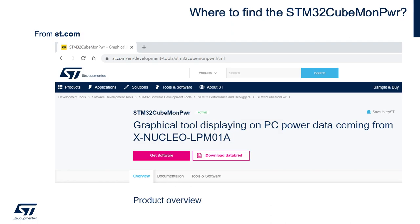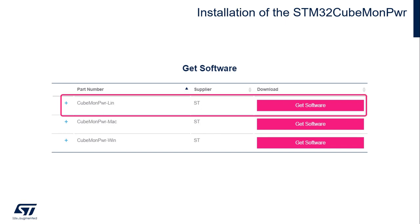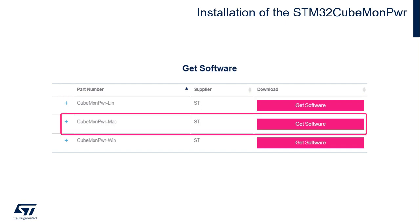Where do you find the STM32 CubeMonitor Power? You find it on our website at ST.com. On the search menu, look for STM32 CubeMon Power, as displayed here. Then it will bring you to this page. Then click on Get Software. Depending on which operating system you are running on your host machine, you will download the appropriate installer for the tool. We are supporting Linux, macOS, or Windows.